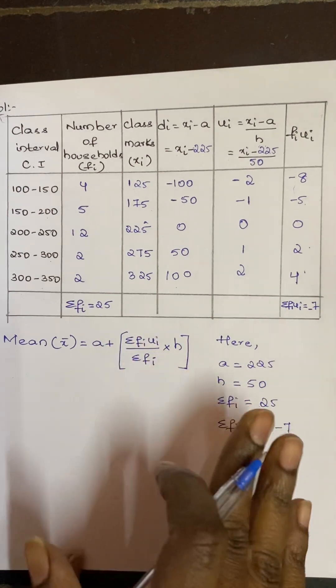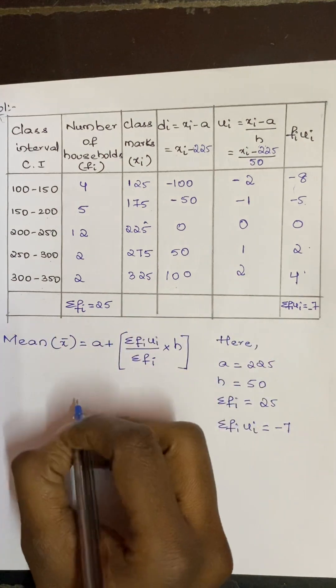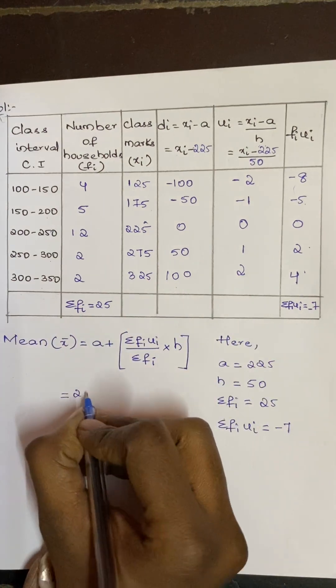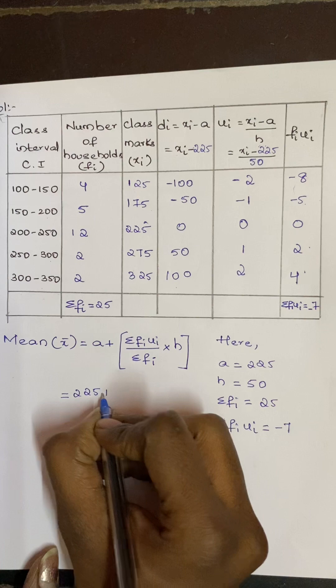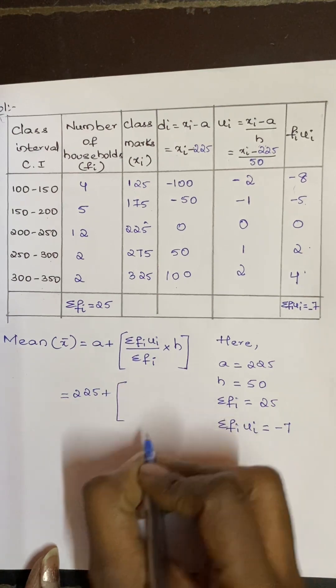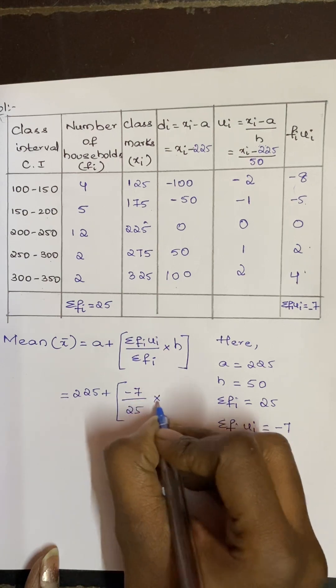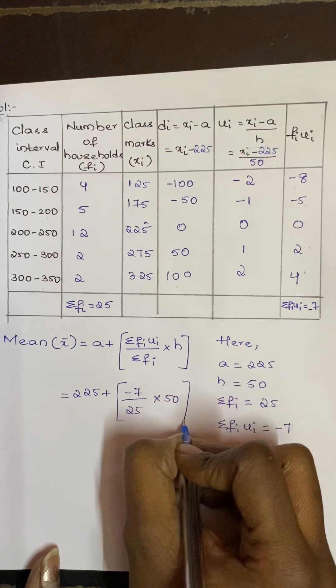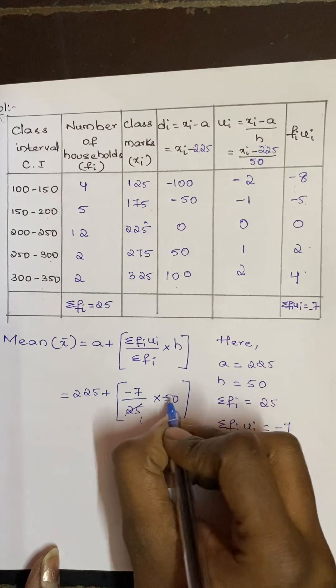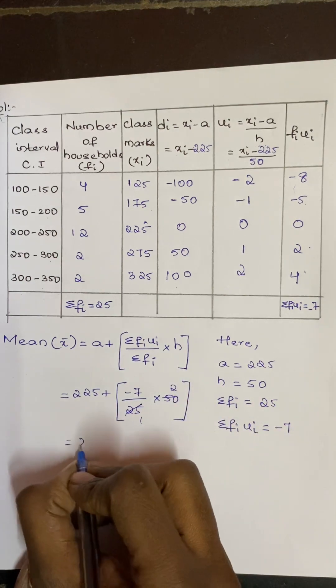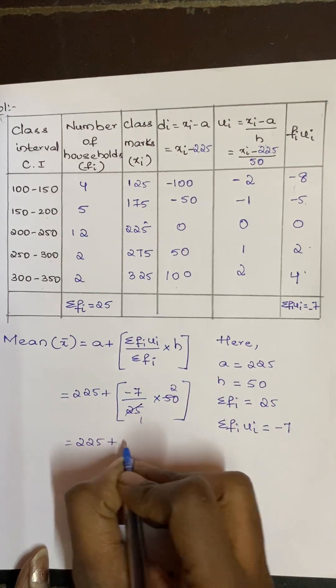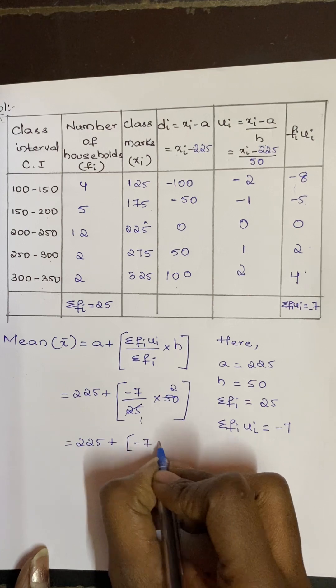That is, a is 225 plus Σfi·ui which is minus 7 divided by Σfi which is 25, times h which is 50. Now 25 twos is 50, so that is 225 plus minus 7 into 2. So it is 225 plus minus 7 into 2 becomes minus 14.